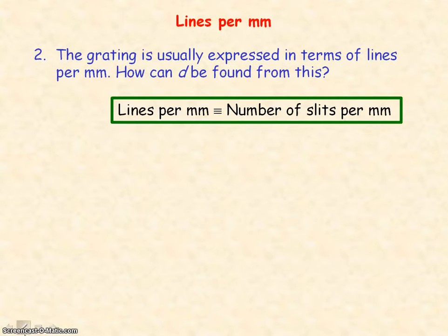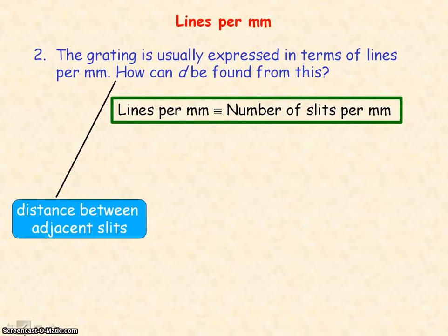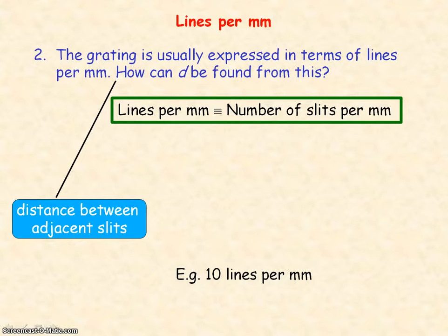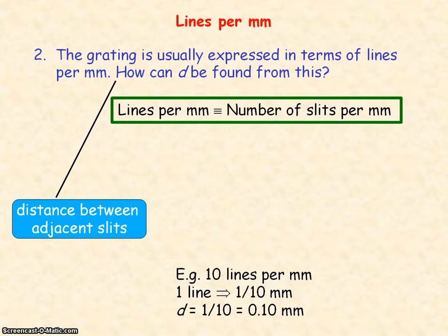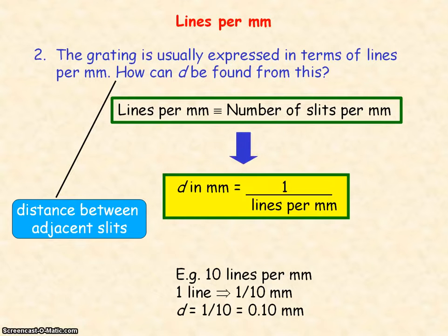Gratings are expressed in terms of lines per millimetre, which represents the number of slits per millimetre. To find d, the distance between adjacent slits — for example, if we have 10 lines per millimetre, that means 10 lines occupy a distance of 1 millimetre, so one line occupies 1 divided by 10 millimetres. The distance between adjacent slits is therefore 0.10 millimetres. So d is found by 1 divided by the lines per millimetre, giving d in units of millimetres.